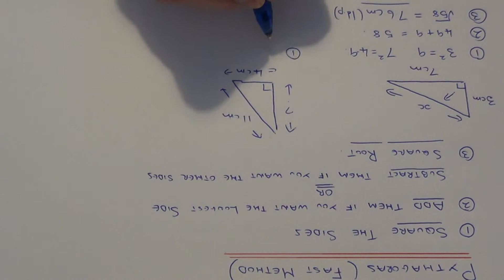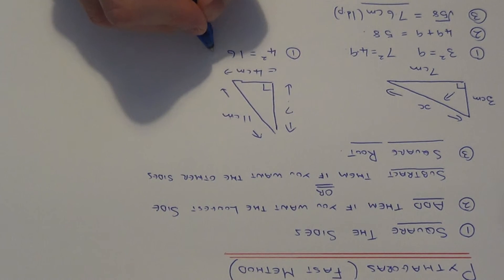So again let's apply the three steps. So first of all you need to square the sides. So four squared is sixteen. Eleven squared is a hundred and twenty-one.